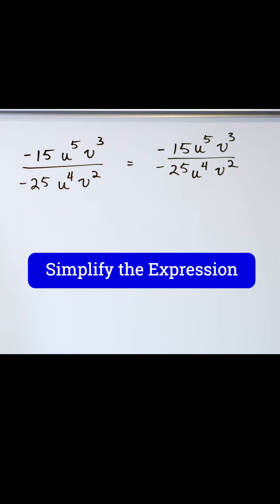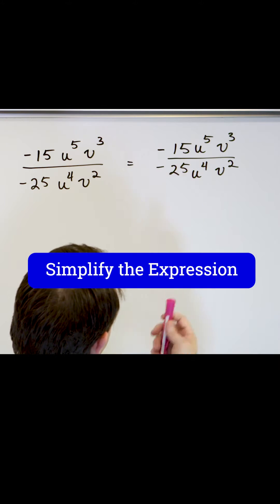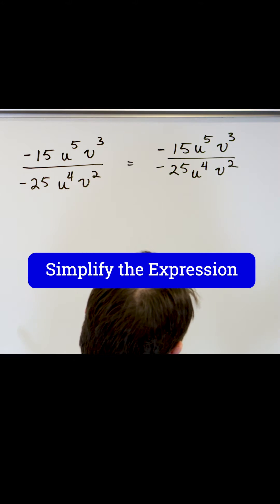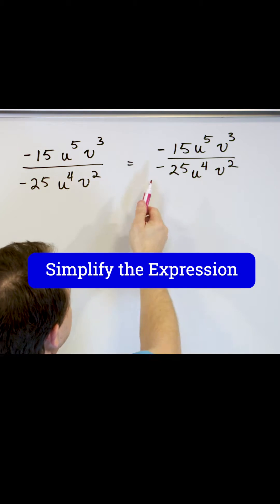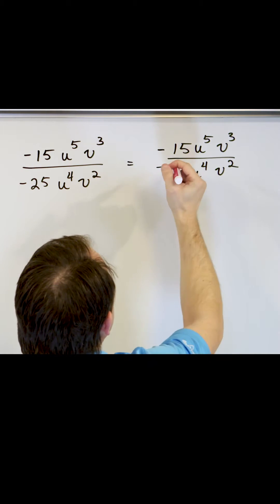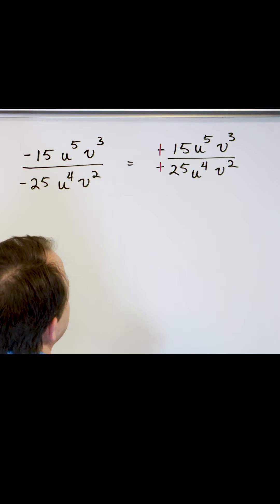So we have to decide what to do. First we go and tackle the numbers. We have 25 and 15, so immediately you should think you can divide both of those by 5. But we also have negative divided by negative, so you can kind of strike through both of those, making them positive.